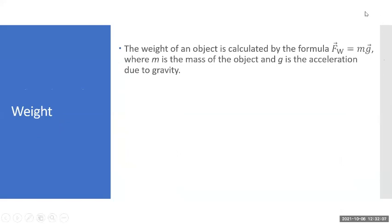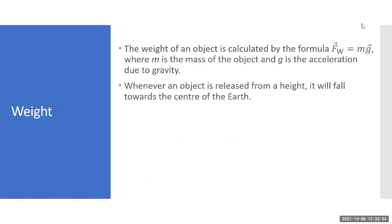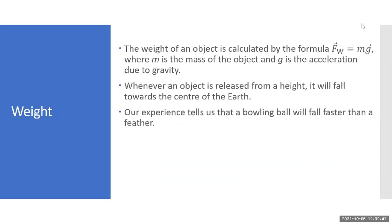Let's start thinking about weight. The weight of an object is calculated by the formula Fw = mg, where Fw means the force of weight or the force due to gravity, m is the mass, and g is acceleration due to gravity. When you release an object from a height it will fall towards the centre of the earth - we call that down.